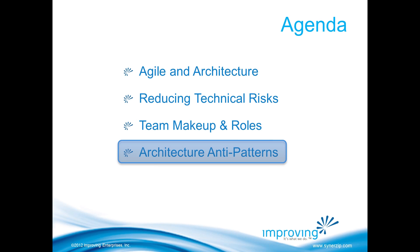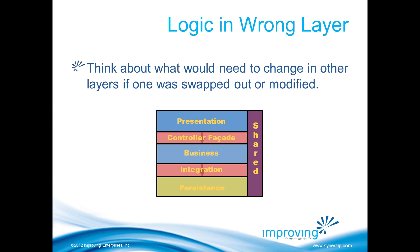Wrapping up with anti-patterns: the first is logic in the wrong layer, which deals heavily with coupling. Think about what you'd need to change if other layers were modified. One example: a customer became totally dependent on Oracle - they wanted to move to a different database because of cost, but couldn't. To Don, this wasn't a problem of insufficient upfront design - it was a poor architectural decision made along the way: not that they chose Oracle, but how they allowed themselves to become dependent on it.